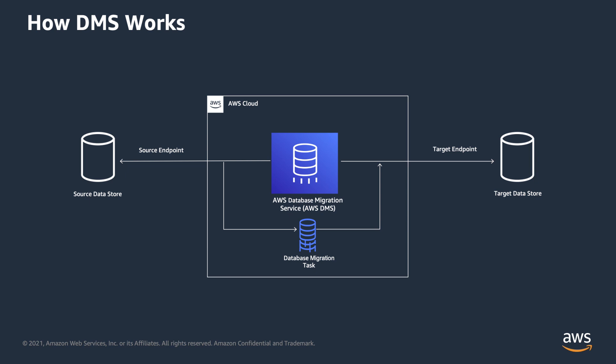A DMS task can be configured for one-time migration, called full load, or you can do a full load plus continuous change replication, called full load plus CDC, or you can simply replicate only the data changes. During full load, DMS connects to the source engine to read existing data and migrate it into the target engine. To read ongoing changes, AWS DMS uses engine-specific APIs to read changes from the source engine's transaction log — for example, redo log files for Oracle, or tlog files for SQL Server. For CDC to work, you need to ensure source changes are captured and retained in transaction logs for DMS consumption.